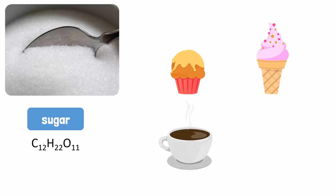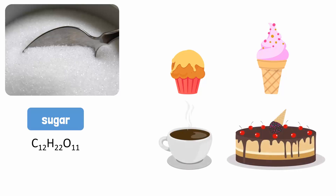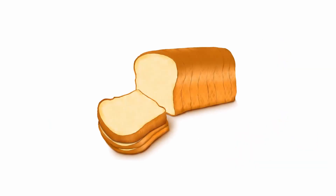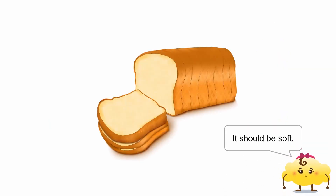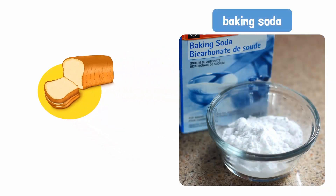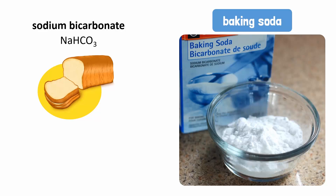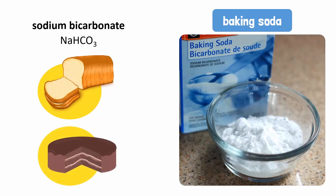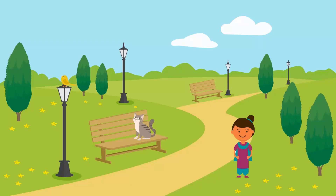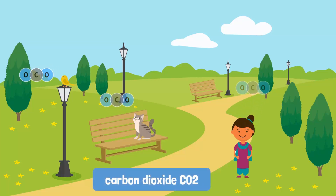Table sugar provides instant energy to our body. Bread becomes soft and spongy when baking soda is added to it. Baking soda is also called sodium bicarbonate. Baking soda, NaHCO3, is used for baking cakes and breads and for cooking some food items.